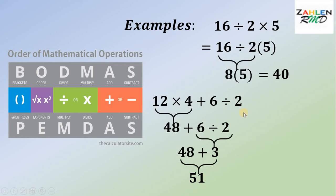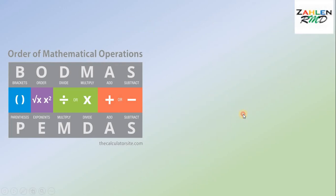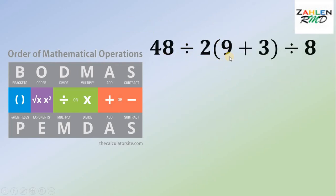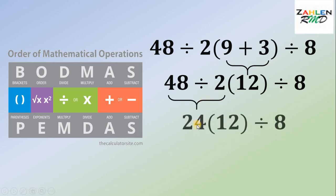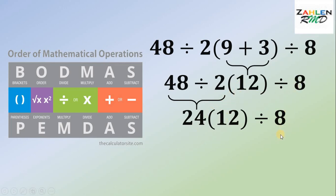Now we are ready to answer the viral problem: 48 divided by 2, parentheses, 9 plus 3, close parentheses, divided by 8. We apply the order of mathematical operations. First, do the parentheses: 9 plus 3 gives us 12. So we now have 48 divided by 2 times 12 divided by 8. We have division and multiplication, and we do this operation from left to right. First: 48 divided by 2 gives us 24, then bring down 12 and 8.